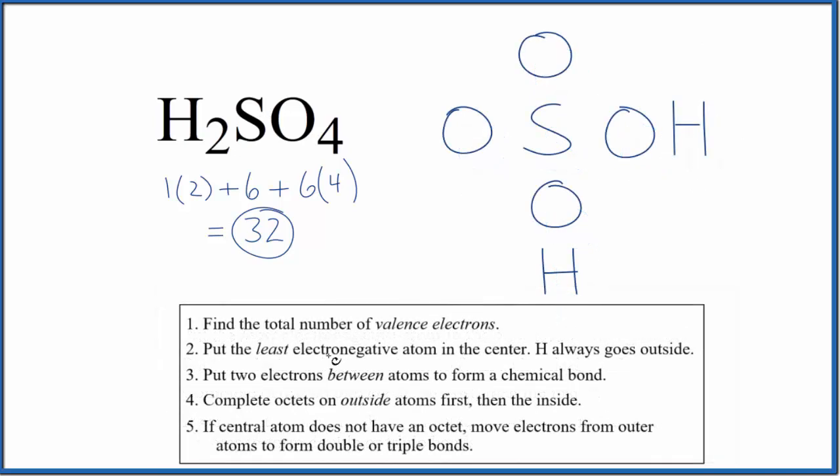So now we can put two electrons between atoms, and that's going to form the chemical bond. So we'll put two between each sulfur and oxygen. So we have these shared as a covalent bond, and now between the oxygen and the hydrogens. So we have our chemical bonds.